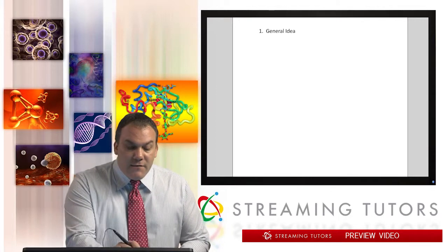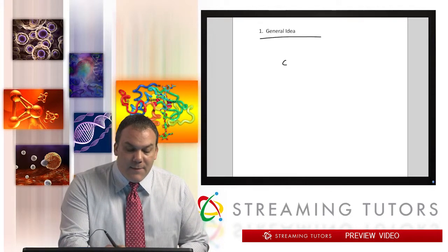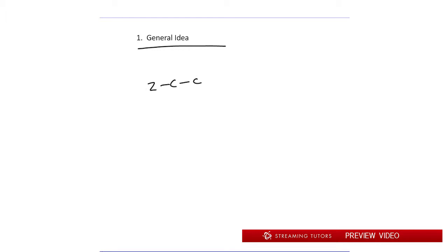Let's start with a general example. Say I have something here labeled Z — we don't care what Z is — and this side has two H's and this side has three H's. We know for sure we'd have two different readings. The H's on one side we'll call Ha; they're on a single-bond carbon with full rotation. Then we have Hb — methyl and methylene are not the same — so they're different readings, but rotation makes all the Hb's equivalent.